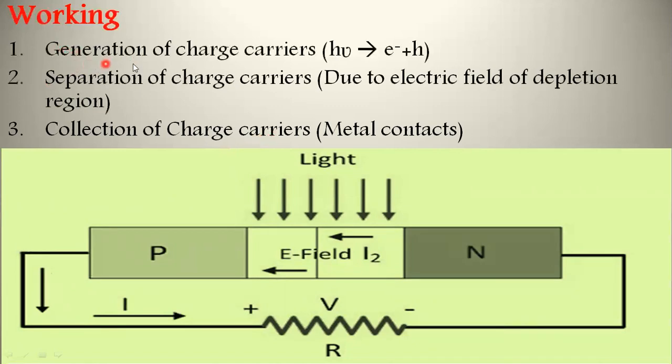First is generation of charge carriers. When light photons with suitable energy are incident on the semiconductor and absorbed by the depletion region, they create electron-hole pairs. One electron-hole pair is created for each photon that strikes the depletion region. The generation of charge carriers depends upon the number of photons striking the region.